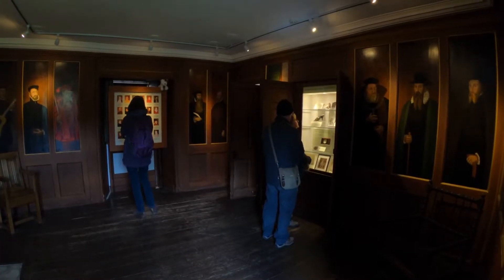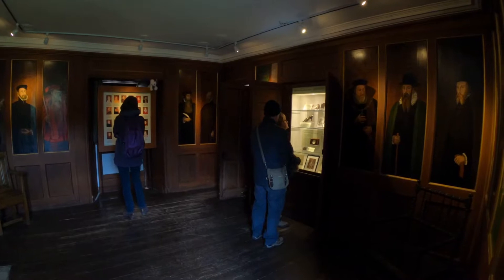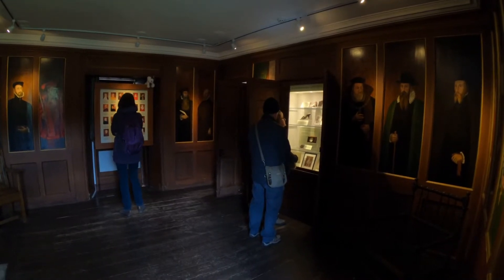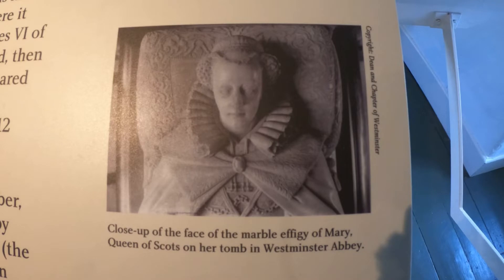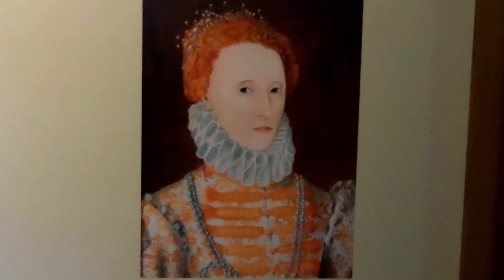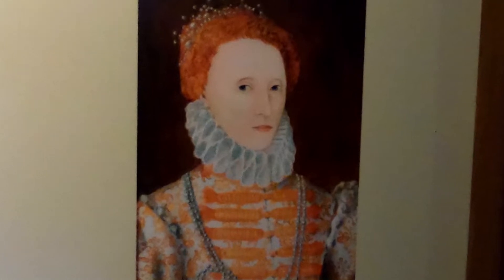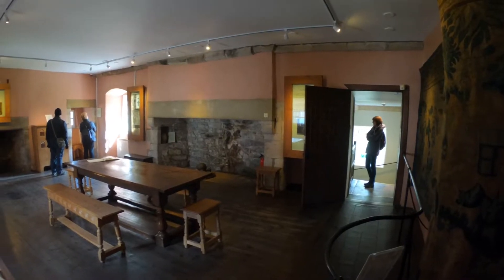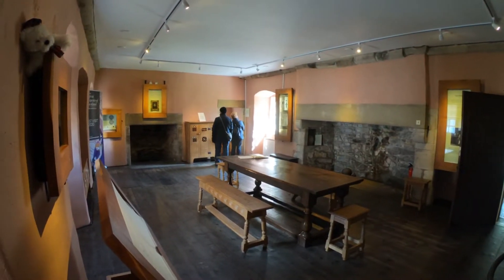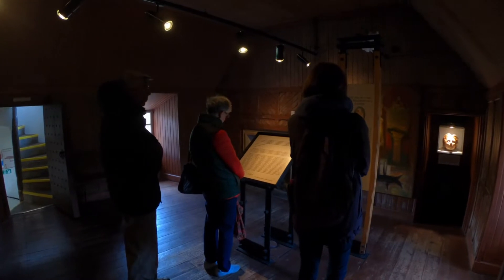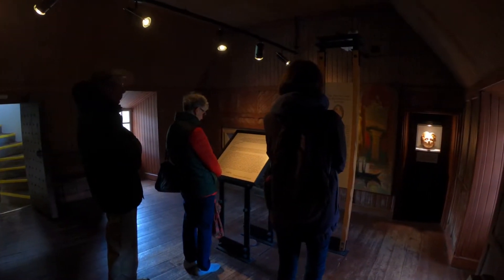Inside it was a bit dark and gloomy, but all the information was well presented and interesting. Mary Queen of Scots had her eye on the English throne, but that was already occupied by Elizabeth I, who was Mary's cousin and rival. Mary became involved in numerous plots against Elizabeth.